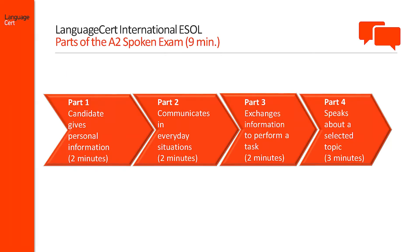Part 1 aims to initially set the candidate at ease and elicit personal information. The first two questions, which aim at eliciting the candidate's name, its spelling, and where he or she is from, are not assessed. However, the next questions are assessed and the candidate will be asked between 3 and 5 more questions. Part 1 lasts 2 minutes.